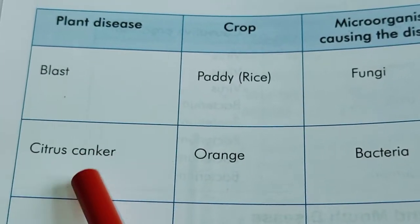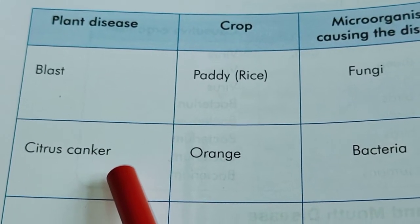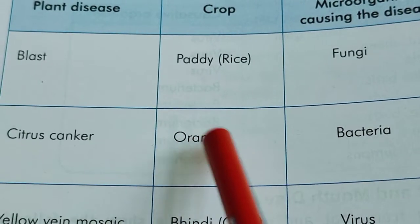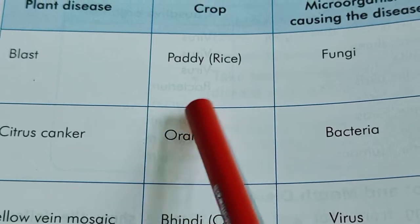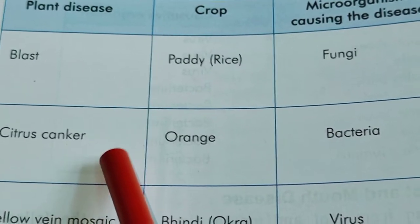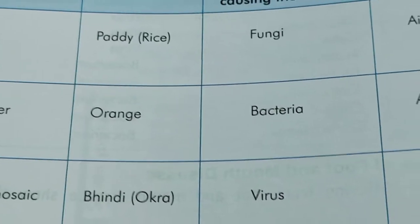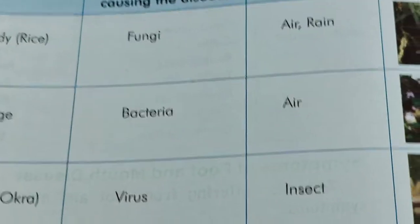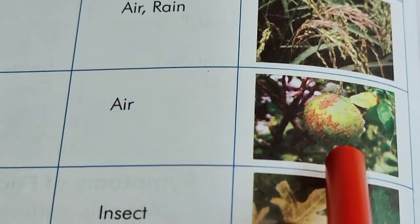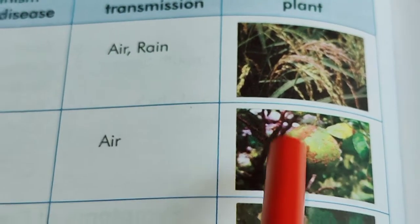Next is the canker disease of citrus fruits. Citrus fruits include orange and lemon. Citrus canker is a very damaging disease. Brown-colored lesions appear on the surface of the fruit and leaves. This is an airborne disease. As you can see, brown-colored lesions on the surface of the fruit — this is called citrus canker.